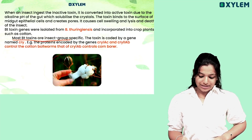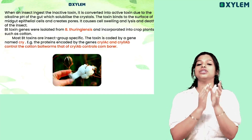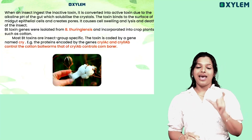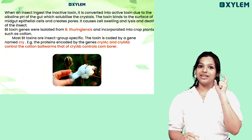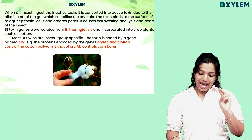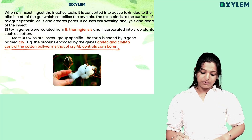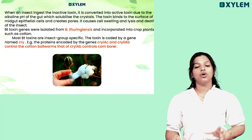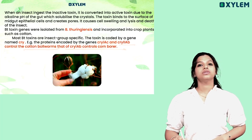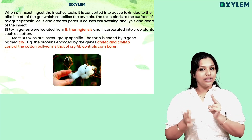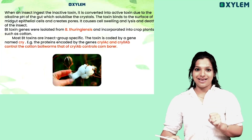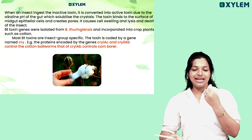The toxin is coded by a gene called CRY. CRY-1AB controls one type and CRY-2AB is also called cotton bollworm gene. CRY-1AB is key to killing the pest — that is important.